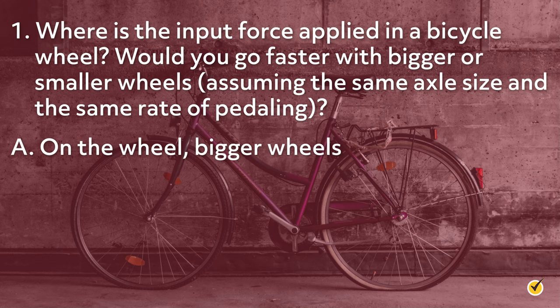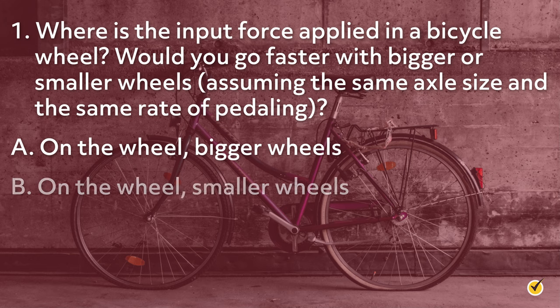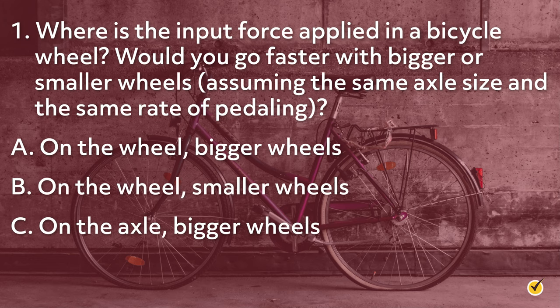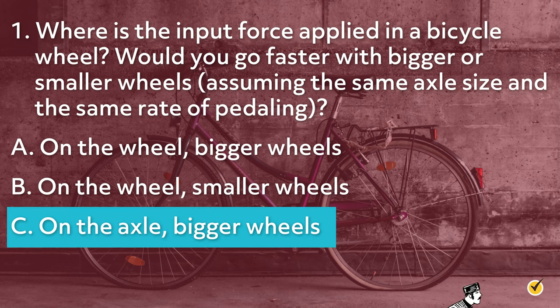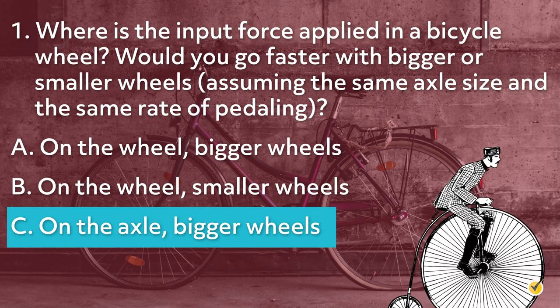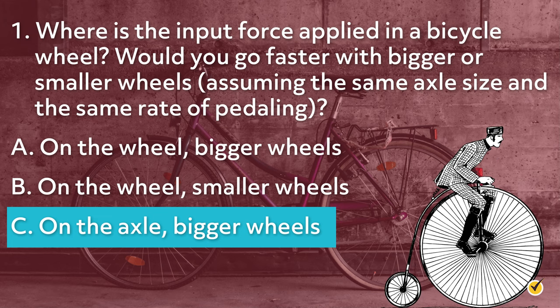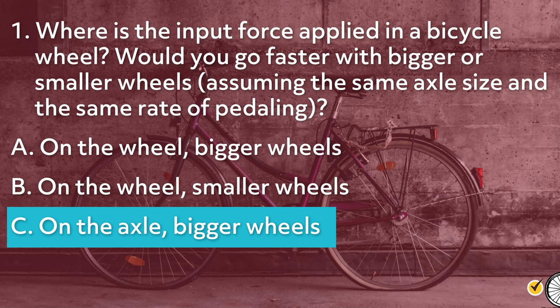A: On the wheel, bigger wheels. B: On the wheel, smaller wheels. Or C: On the axle, bigger wheels. The correct answer is C. Through pedaling and with the use of gears, the force is applied to the axles of the wheels in order to make the wheel revolve. If the wheel is bigger and the person still pedals at the same rate, the axle is moving at the same speed in both cases — the bicycle will go faster because the circumference of the wheel is bigger. However, they will need to apply a bigger force to pedal.